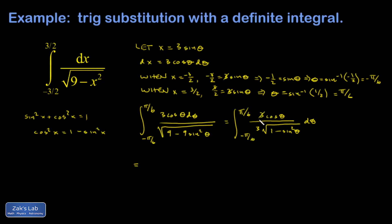Okay, so the 3 cancels. Now I can replace 1 minus sine squared theta with cosine squared theta. But when I square root that, I just get cosine theta. So I'll go ahead and do all that in the next step.